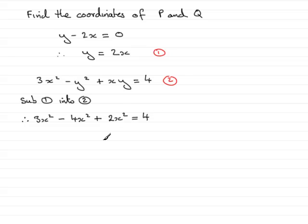Simplifying the left hand side, that gives me x squared equals 4. Take the square root of both sides and you're going to have x equals plus or minus 2.